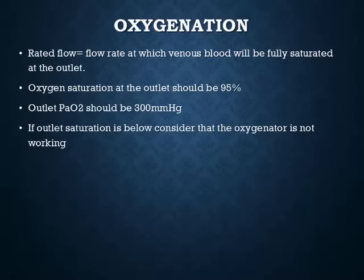For oxygenation in the oxygenator: the package insert provides a rated flow measurement — the flow rate at which venous blood will be fully saturated at the outlet for a given hemoglobin. For example, if your patient has a hemoglobin of 12% at this cardiac output, the expected post-oxygenator PaO2 is 350. If it's not meeting the package requirement, the oxygenator may be faulty.